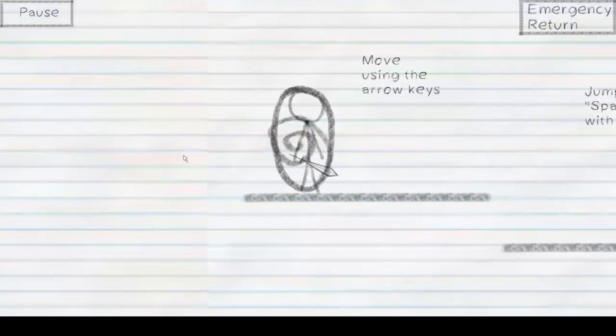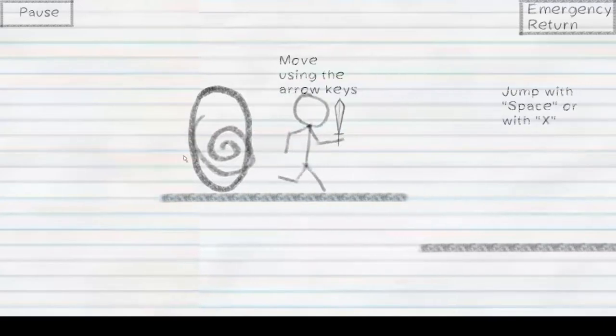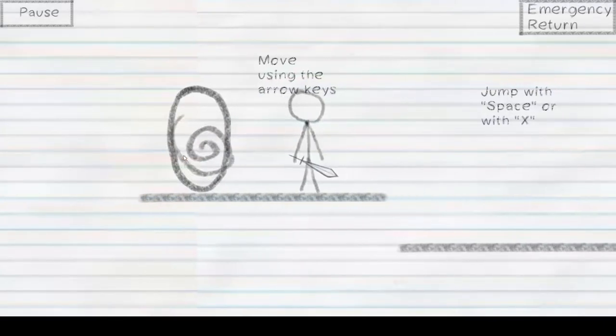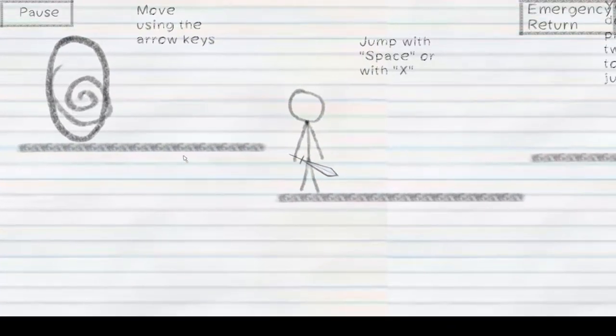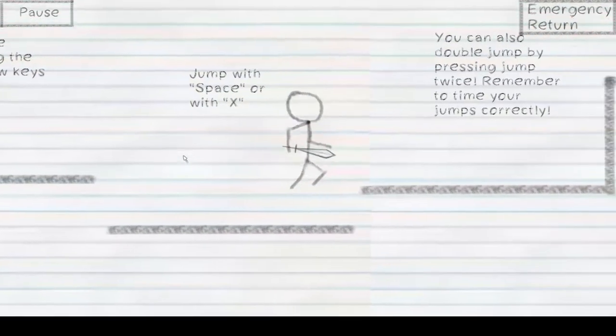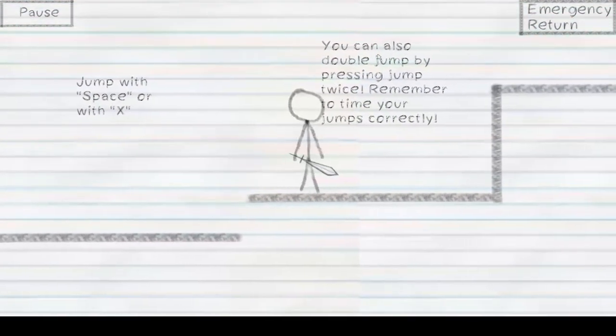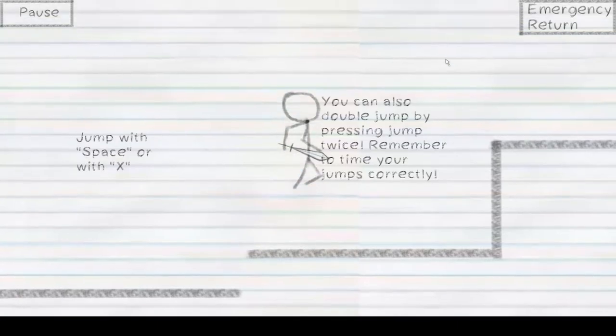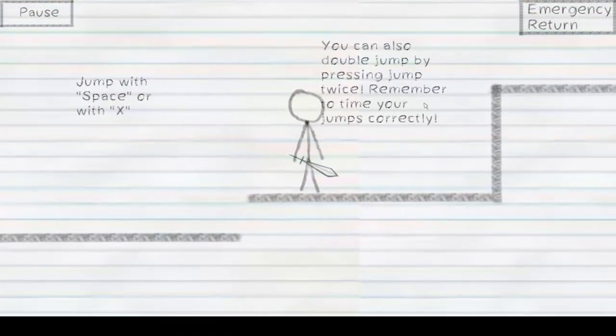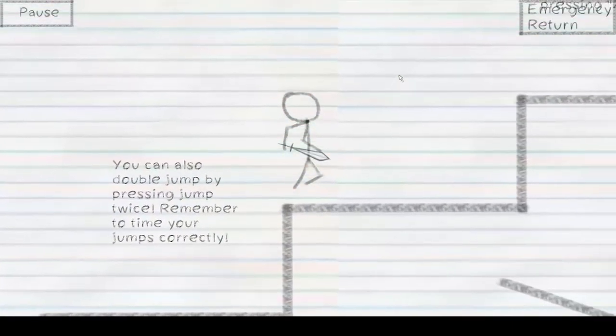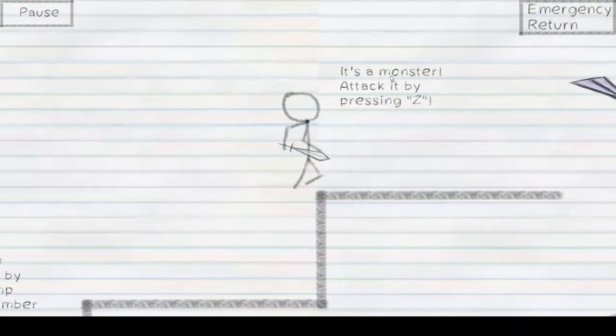This is where we get to see the game in action. First up, we have our basic intro here. Move using the arrow keys, or you could use WASD. Jump with space or X, doesn't make much of a difference. But it's pretty cool to have these here to let players know what they're getting into. You can also double jump by pressing twice, remember? Time your jumps correctly. And I feel like that last sentence is very important. There will be times where you will have to time your jumps very correctly, or you could die.